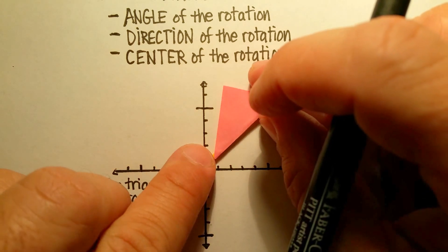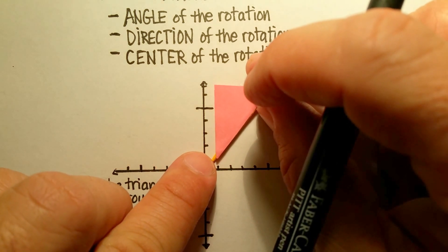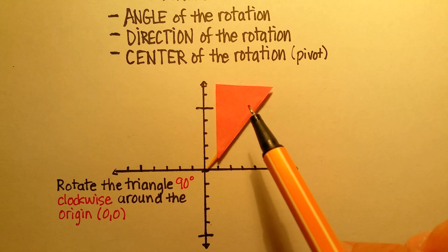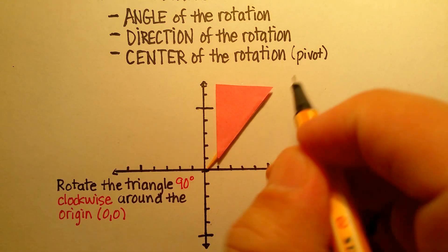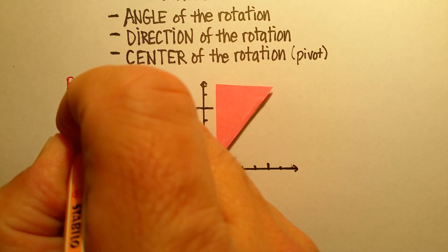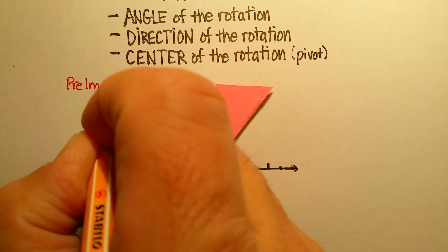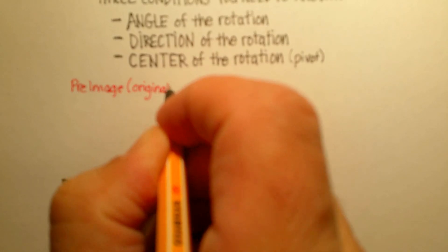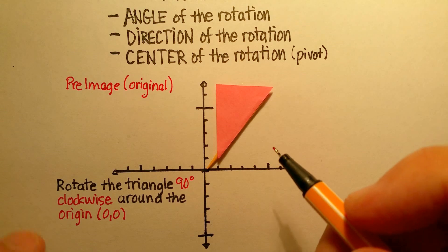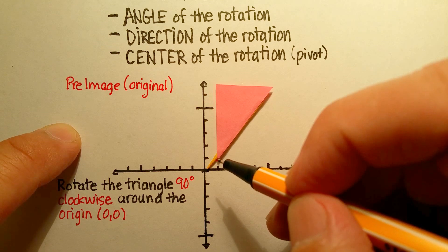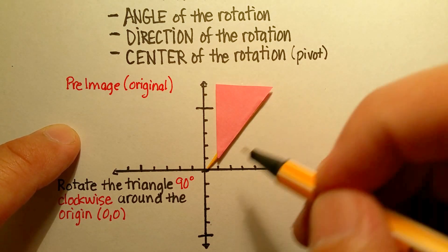Before we actually do that, I want to use some vocabulary that you've already learned. Remember that where the original image is located is called the pre-image — that's the original location. Once we have that original location, I want you to take note of what the three vertices are and what the coordinates for the three different vertices are.